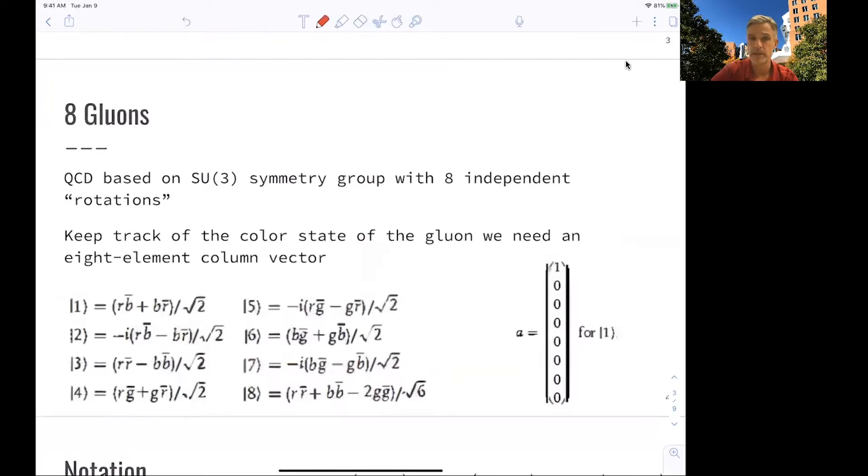There's eight independent such rotations. And what you want to think about is just moving quarks from one color state into the next. So you can write them down, as I show here. And we do this in linear combination of color and anticolor.